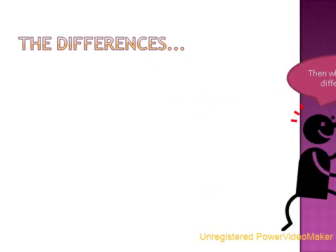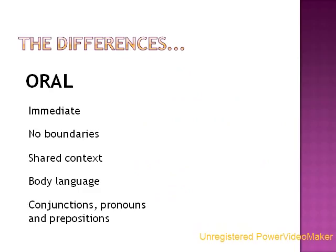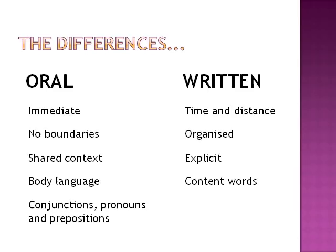What are the differences between oracy and writing? Spoken language is immediate, with no sentence or word boundaries. It relies upon shared context and stress, intonation, gestures and body language. Oral language has fewer content words, with more conjunctions, pronouns and prepositions. Written language, on the other hand, is composed to communicate ideas over time and distance. It has more structure than oral language and is organised into words, sentences and paragraphs. Writing uses more content words and is, through necessity, more explicit about context, as the reader is likely to be removed from the writer's situation.